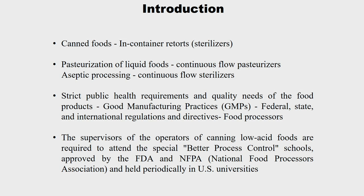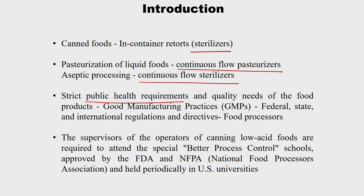For canned food, sterilization is usually done using retorts, which is a batch process. Pasteurization of liquid foods happens on continuous flow pasteurizers, while aseptic processing — where both food and can are separately sterilized — uses continuous flow sterilizers. Whether using batch or continuous process, we need to be very strict about public health requirements, because the cleaning of equipment, perms, valves, bleeders, and all equipment should comply with federal, state, and international regulations.